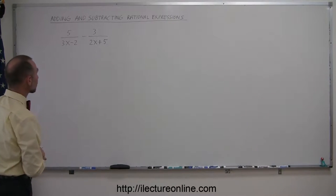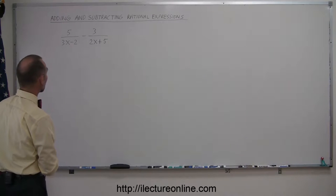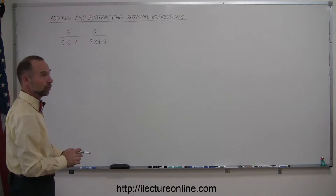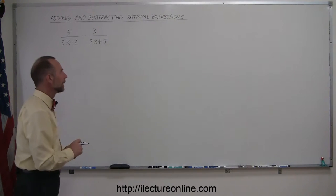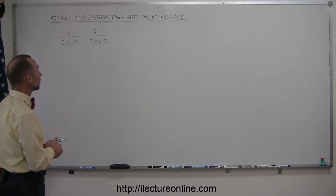Here's another example of how to add and subtract rational expressions. Here we have a subtraction of two rational expressions, and again the trick is to make the denominators the same. Now here you can see that there's no lowest common denominator.